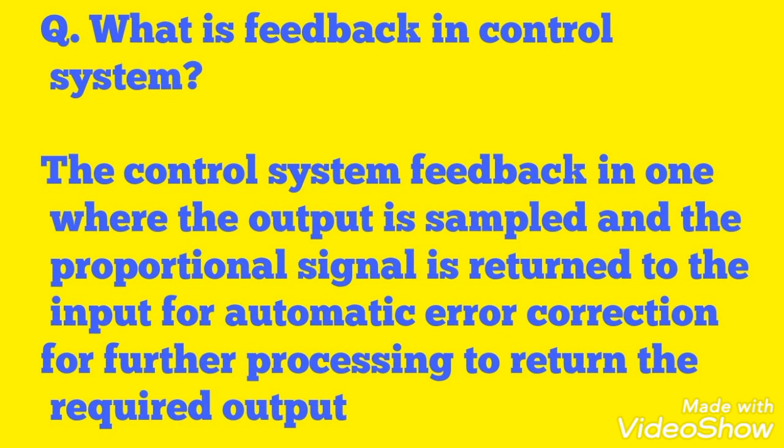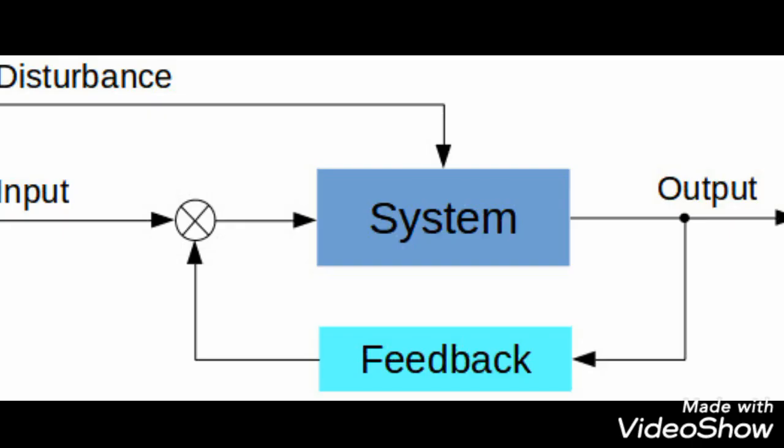What is feedback in a control system? Feedback is where the output is sampled and a proportional signal is returned to the input for automatic error correction and further processing to obtain the required output. As mentioned, we use some feedback to control the input.